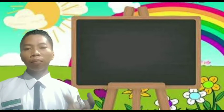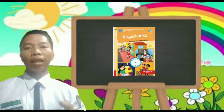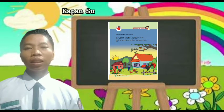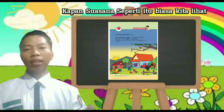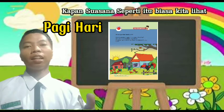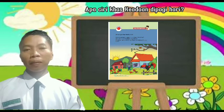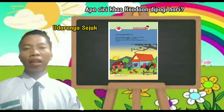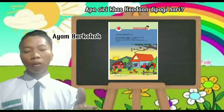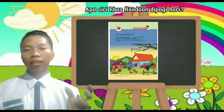Sekarang dibuka buku tematiknya halaman 2. Di sana ada gambar, kalian perhatikan. Kapan suasana seperti itu biasa kita lihat? Iya, betul — di pagi hari. Apa ciri khas keadaan di pagi hari? Iya, udaranya sejuk. Ayam berkokok. Ada matahari terbit. Burung berkicau.